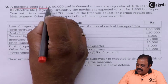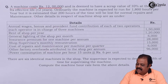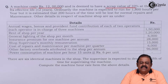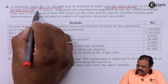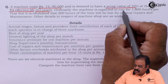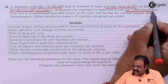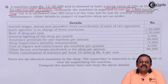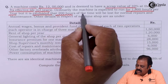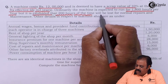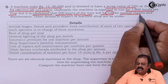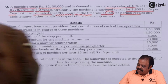A machine costs Rs. 12 lakhs and is deemed to have a scrap value of 10% at the end of its effective life of 12 years. Ordinarily, the machine is expected to run for 1800 hours per year, but it is estimated that 200 hours of this time will be lost for normal repairs.